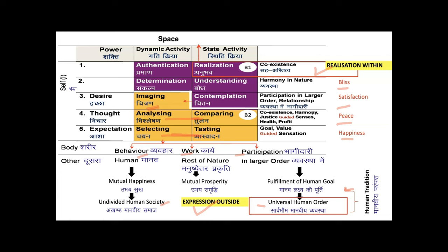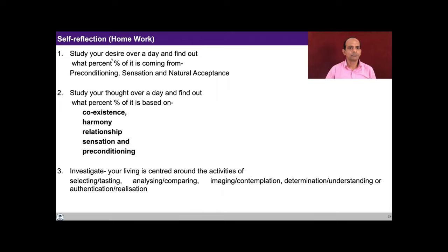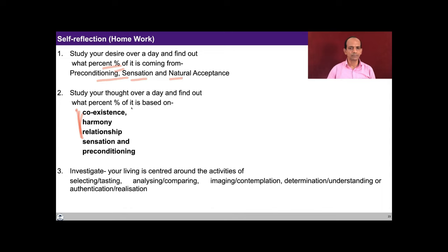You need to study your desires over a day and find out what percentage of your desires are coming from preconditioning, sensation and natural acceptance. With a better understanding of how imagination gets dictated by preconditioning or sensation and how it gets self-organized when the source is natural acceptance, we can study your thought over a day and find out what percentage of your thought is based on relationship, harmony, sensation and preconditioning. Gradually when you enter into the process of self-exploration and are able to activate the higher level activities, this percentage goes up and the dependence on sensation for happiness comes down, preconditionings get evaluated and transformed into the right kind of desire.